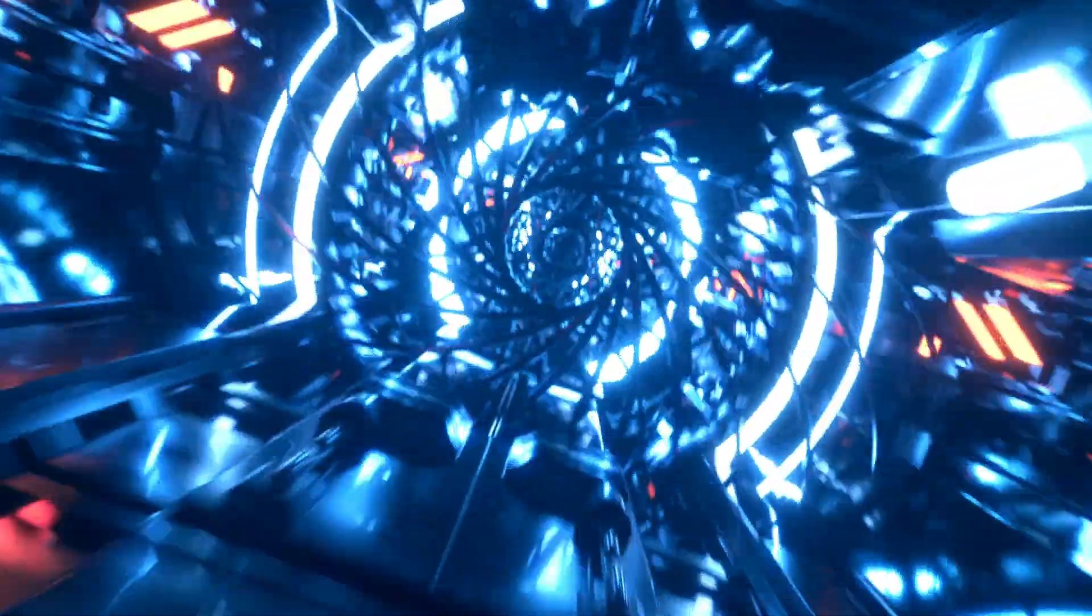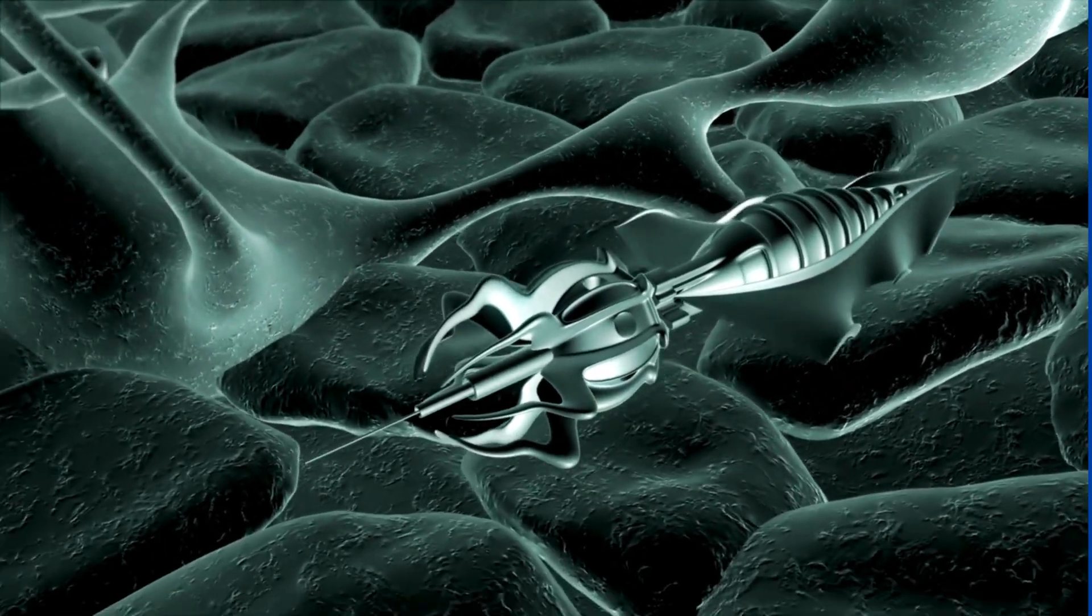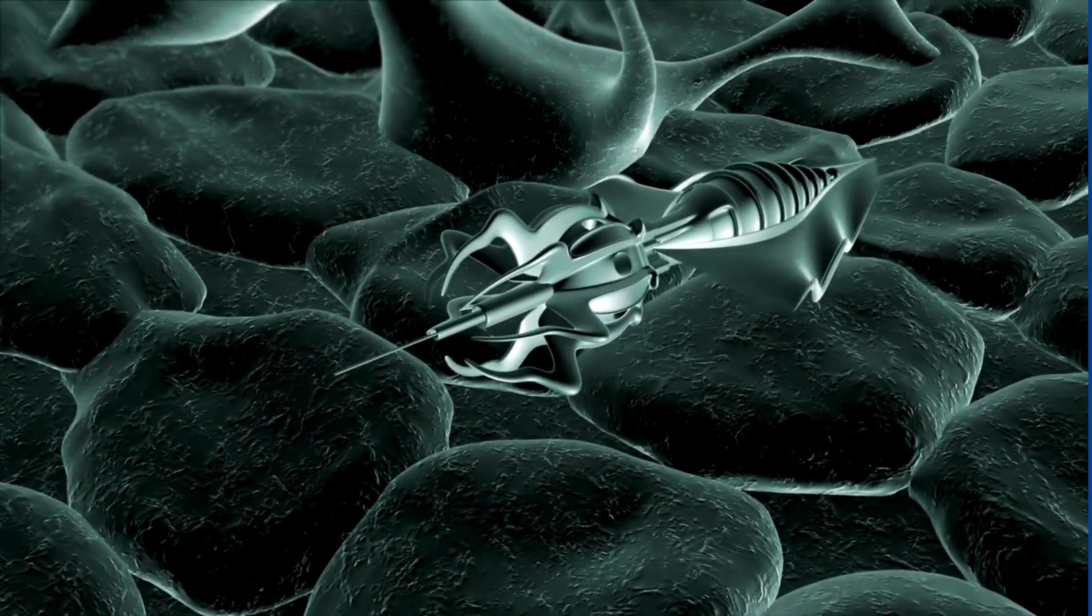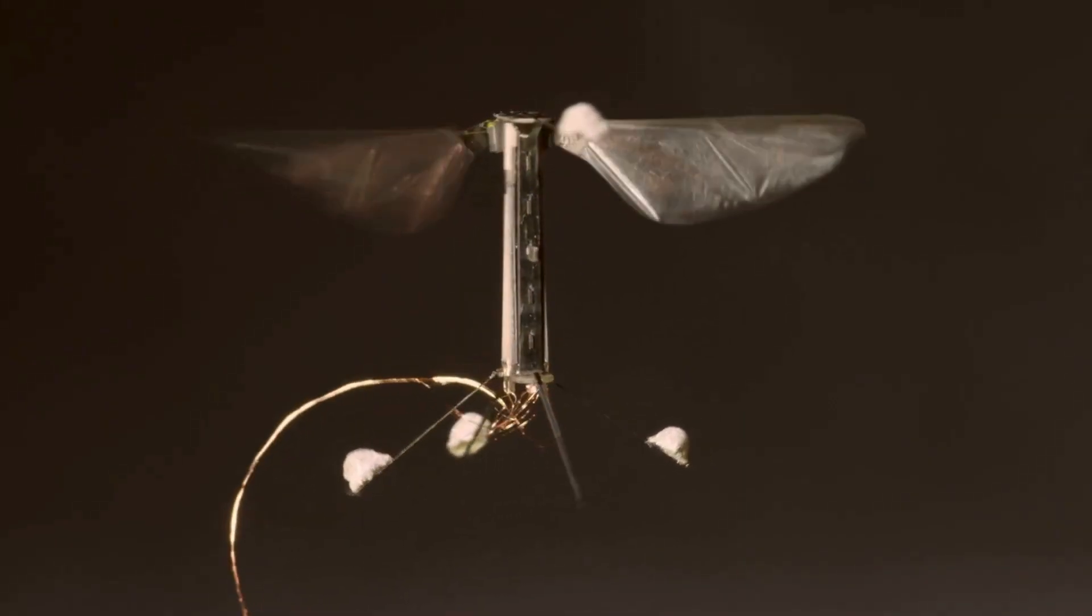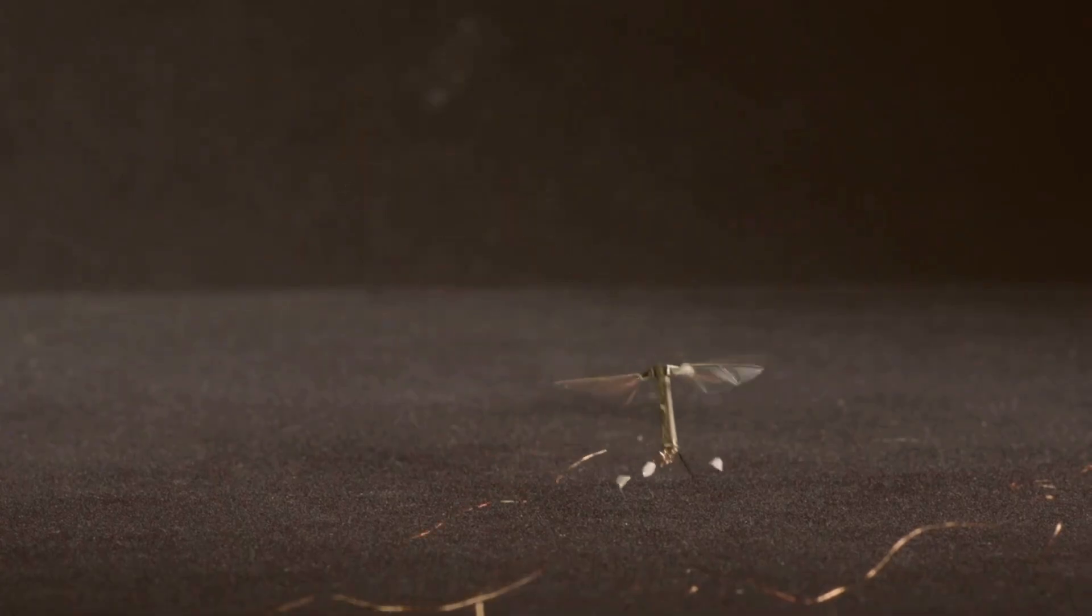Robots are no longer just in factories. Now they've become so tiny that they're smaller than your eyelash. Meet Robo-Bee, developed at Harvard. It's the size of a bee, can flap its wings and fly. And one day, it could help pollinate crops or even search for survivors in disasters.